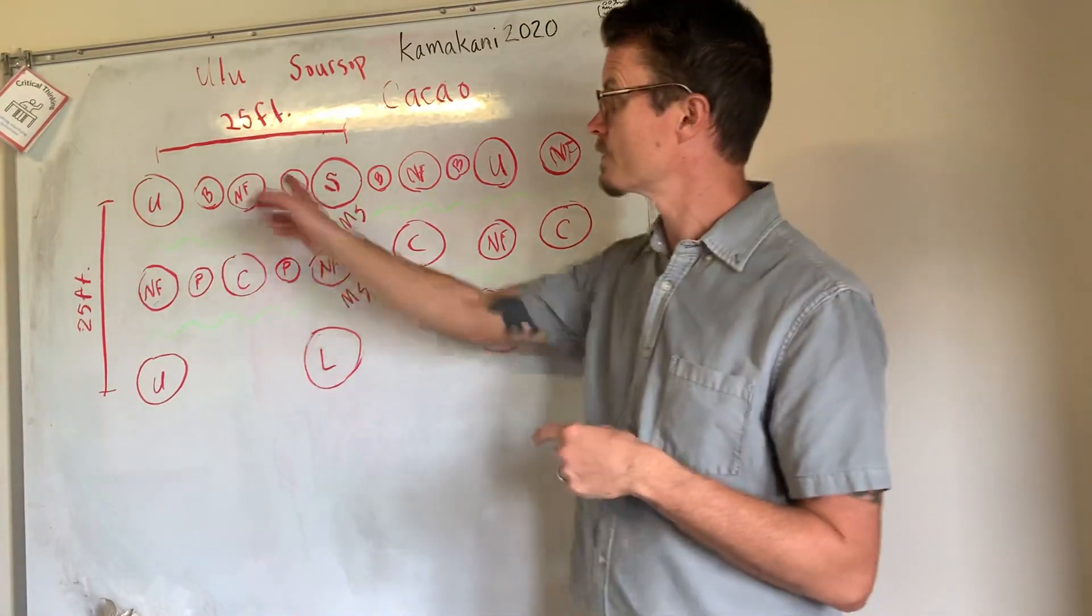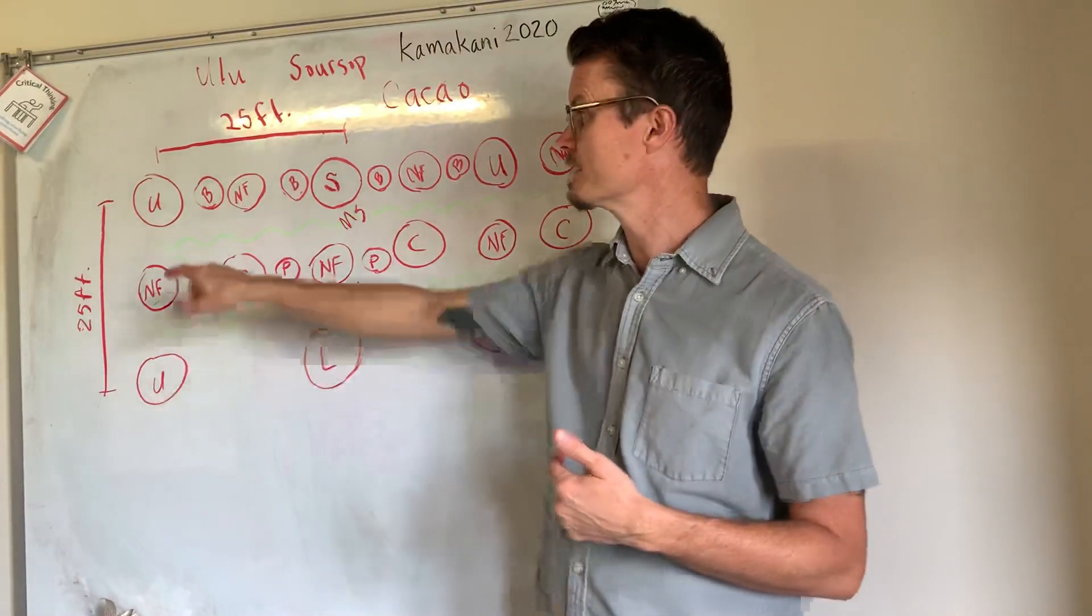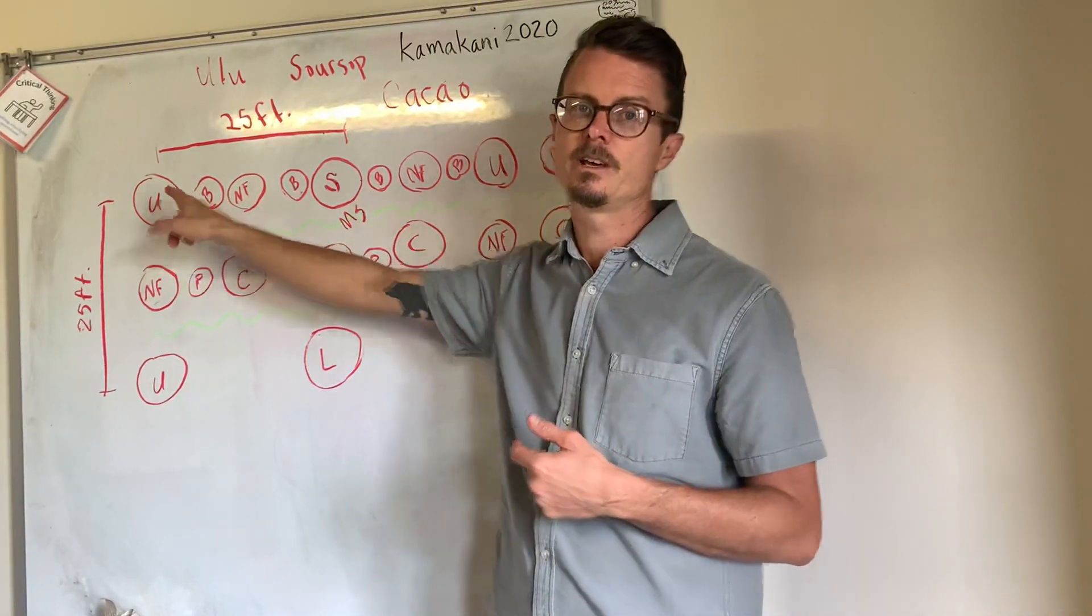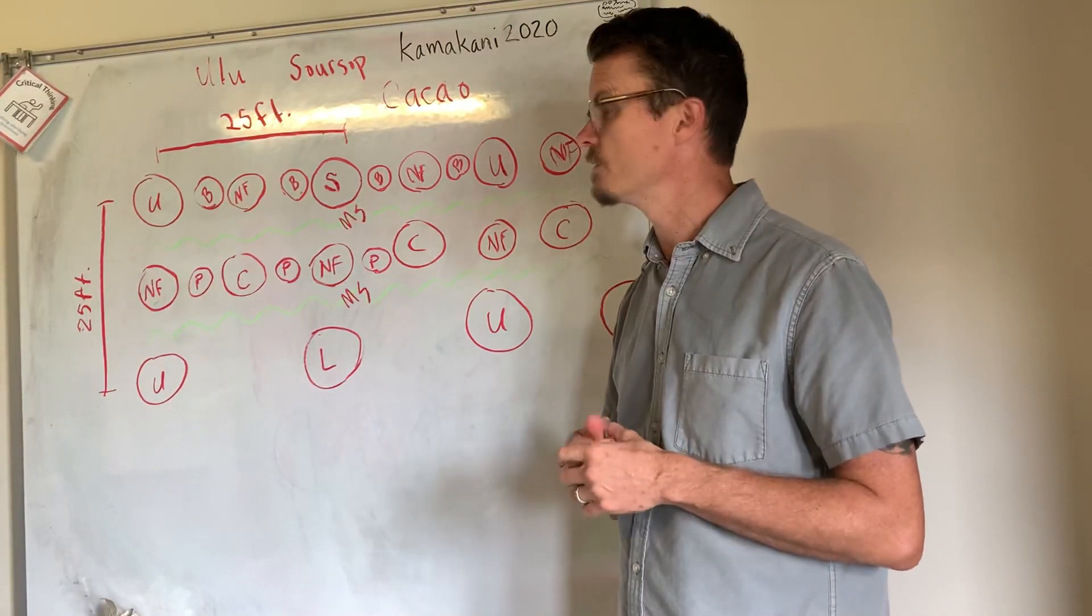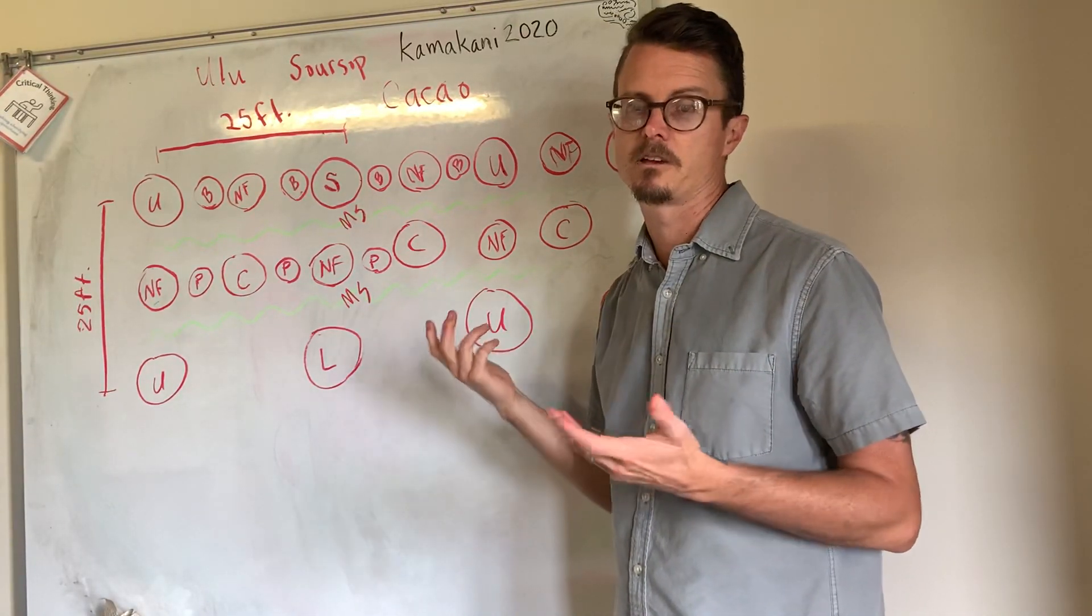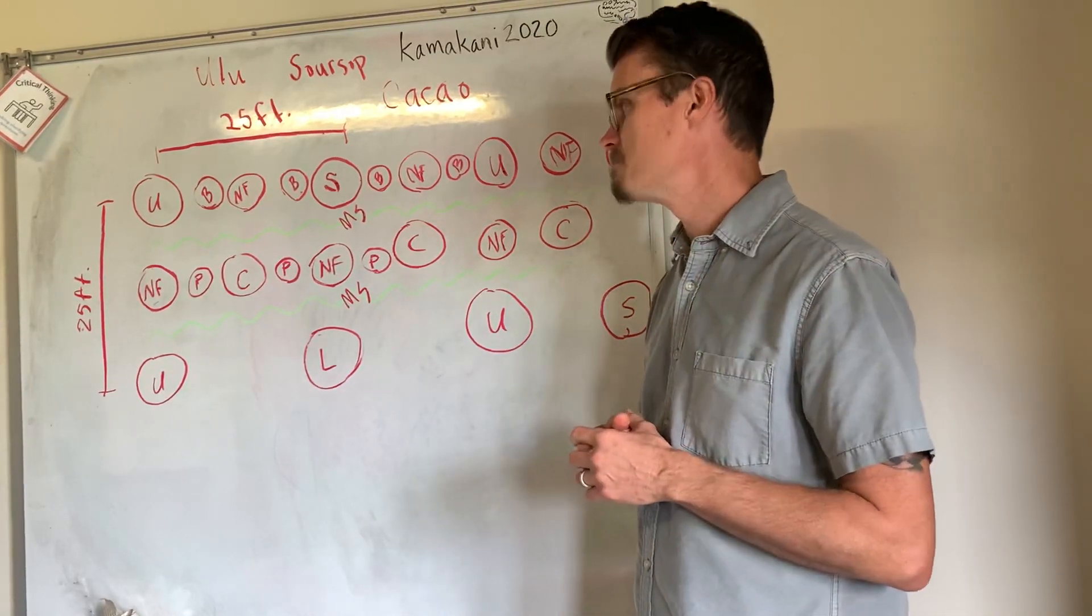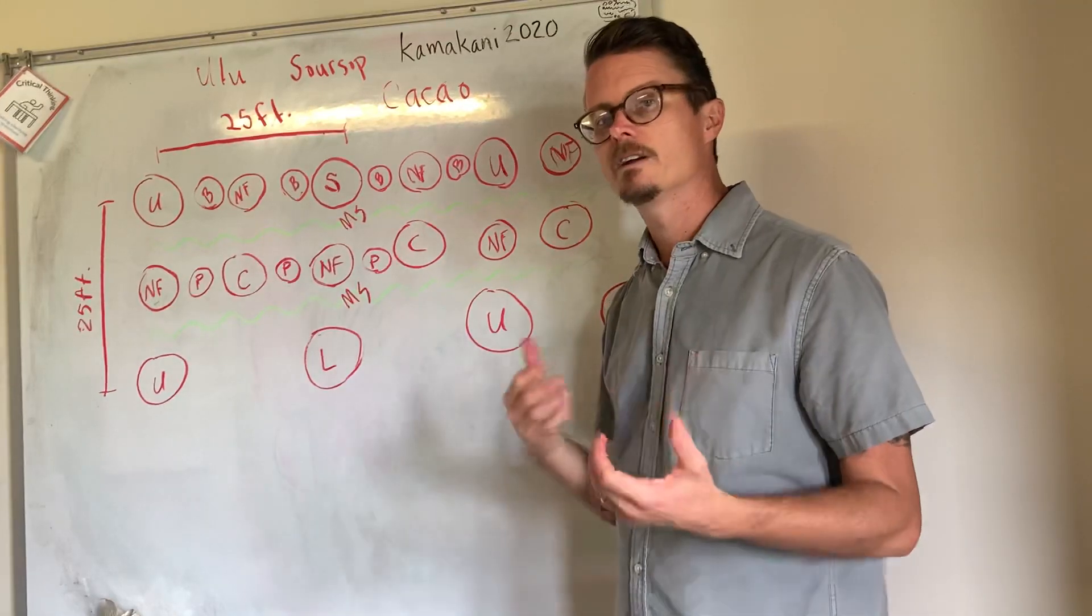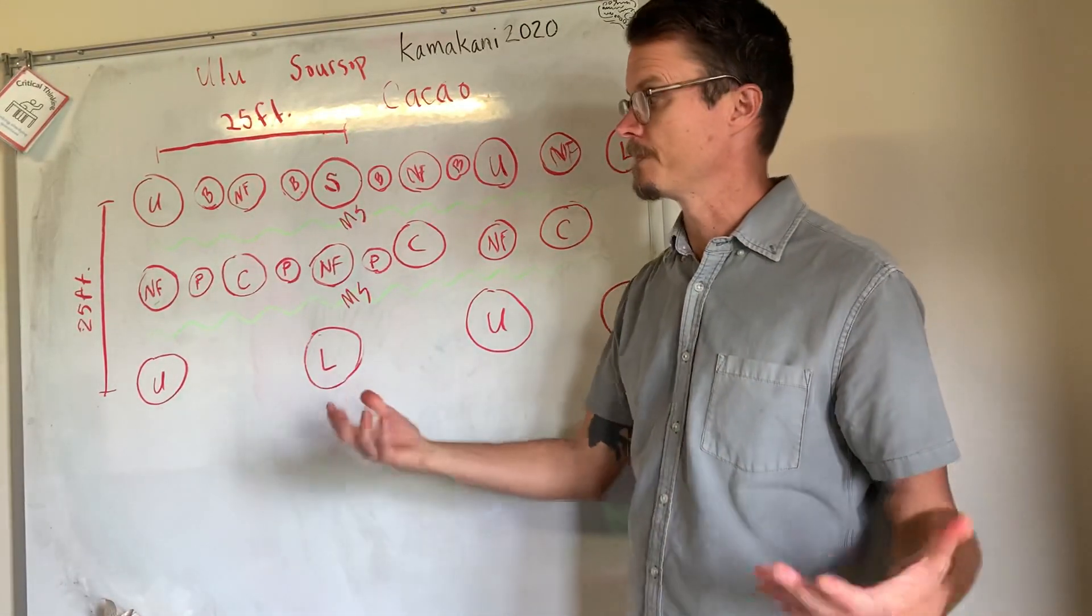Spacing wise, I chose 25 feet because that is what is recommended on our island for spacing ulu trees, and it's recommended by a very good source. So I decided to go with that spacing. I think it's just a good place to start. But it's possible depending on how you're going to prune and maintain, you can squeeze these closer together, spread them further apart.